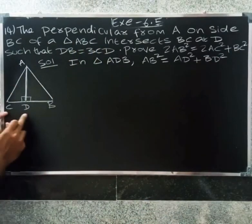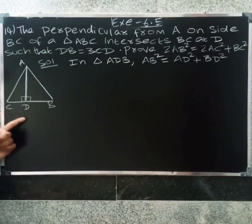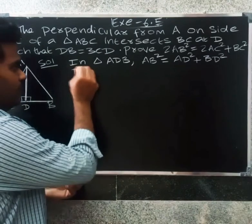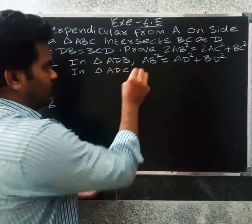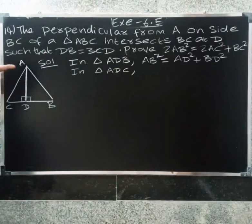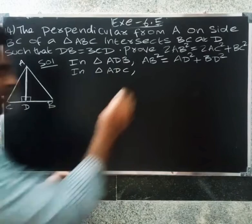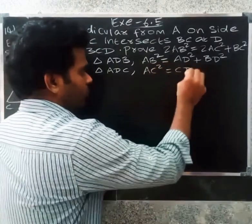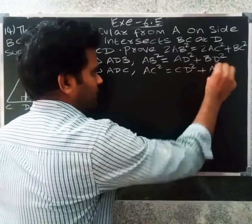Next, in triangle ADC, I am going to prove: AC square equal to CD square plus AD square.